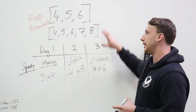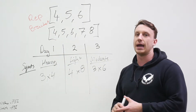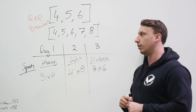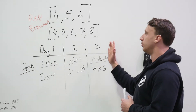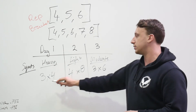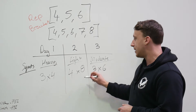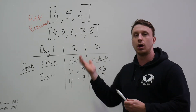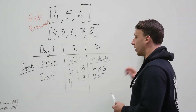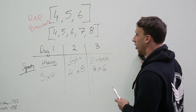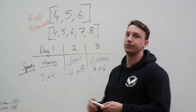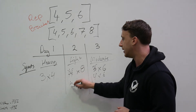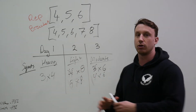Coming back to the rep bracket, you can see how you can progress up or down the scale to either increase intensity or increase volume depending on what you're trying to achieve. If you want to increase intensity, simply move down the bracket — for example, the sets of eight might come down to sevens, so four sets of seven, and the moderate day might come down to three sets of five, so the weight goes up. If you want to increase total volume, we recommend increasing the volume of your lighter days first — so that four sets of eight might become five sets of eight, and the moderate day could go to four sets of six.